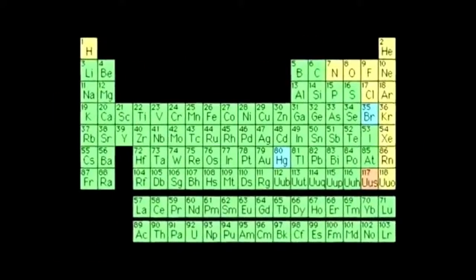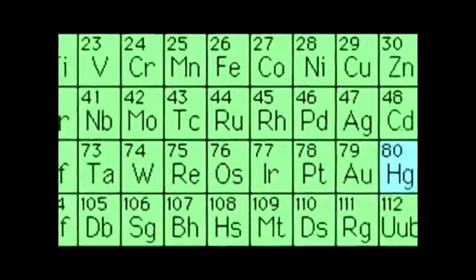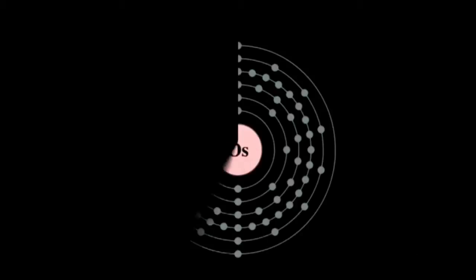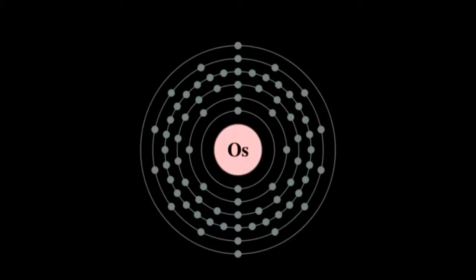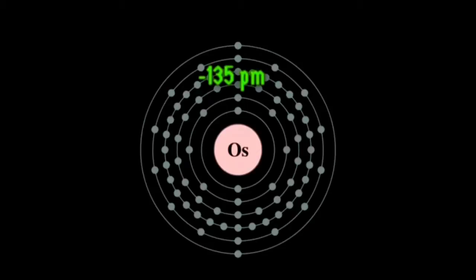Before we get into the real juicy information about Osmium, let's take a look at some basic information. On the periodic table, Osmium is located in Group 8, Period 6, meaning it's a transition metal. The symbol of Osmium is Os, and it has an atomic number of 76. The atomic mass is 190.2 atomic mass units, while the molar mass is 190.2 grams per mole. An atom of Osmium contains 76 protons, 76 electrons, and 114 neutrons. The atomic radius is 135 picometers.